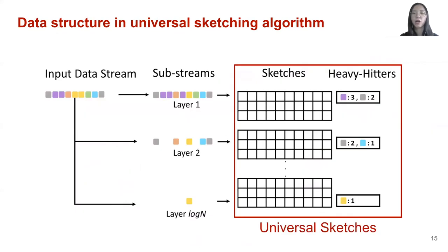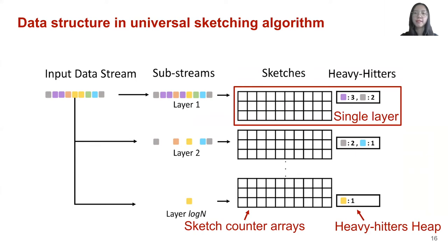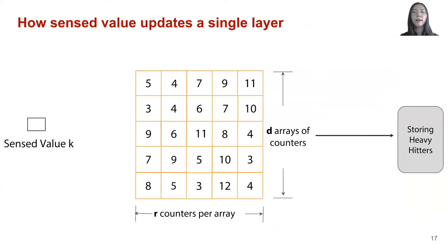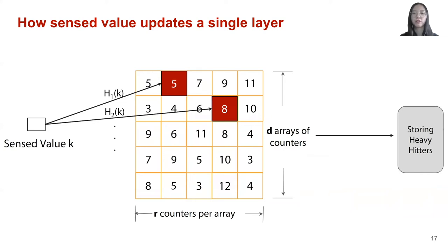To better understand how universal sketching algorithms work, let's take a look at the data structure used. It is a multi-layer data structure, and each input data will update several or all layers of universal sketches. For each layer, it contains sketch counter arrays for input data to update, and also a heavy hitters heap to store the heaviest elements in that layer. The process for a sensed value k to update a single layer is as follows: for each row of counters, there is an independent hash function h to identify the location to update. For example, for the first row we use hash function h1, for the second row we use h2, and so on. After all counter updates in a single layer, we retrieve the median value of all updated counters and use it to update the heavy hitters heap.